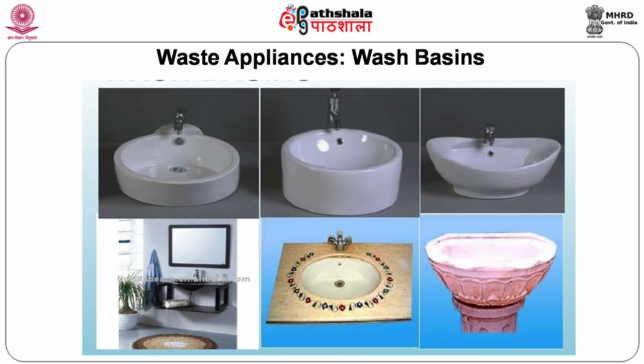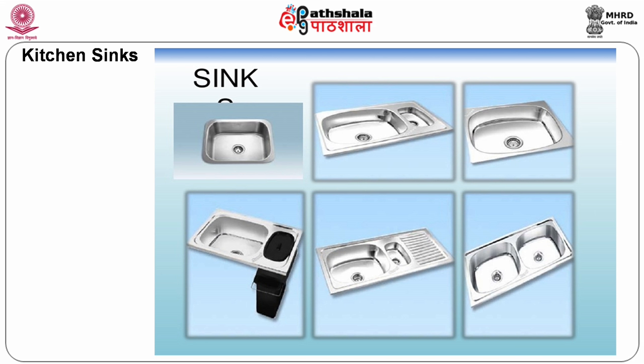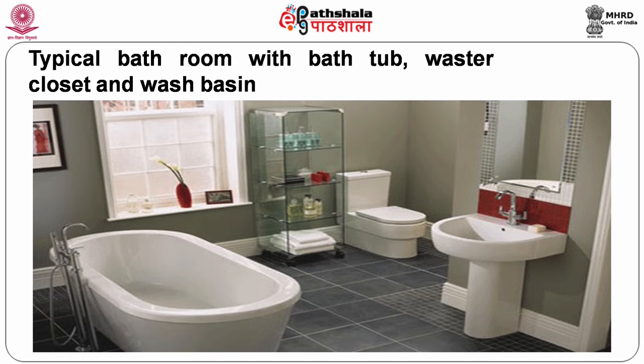These are different types of washbasins to collect wash water, hand wash, and also kitchen sinks to wash utensils. A typical bathroom consists of the bathtub, water closet, and washbasin arrangements — all to collect the wastewater from the household.